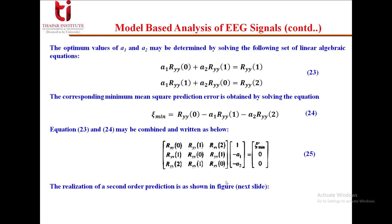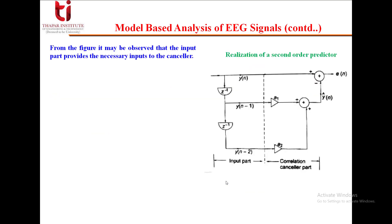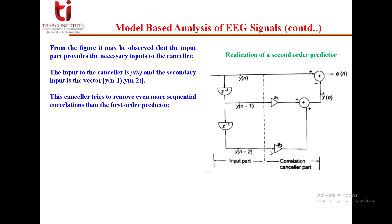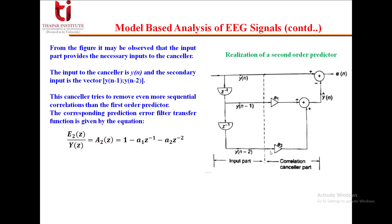The realization of this second-order filter can be seen by taking its Z-transform. The input to the canceler is y(n), and the secondary inputs are y(n-1) multiplied by a₁, and y(n-2) multiplied by a₂. This canceler tries to remove even more sequential correlations than the first-order predictor. The corresponding transfer function is E₂(z)/Y(z) = 1 - a₁z⁻¹ - a₂z⁻².lez